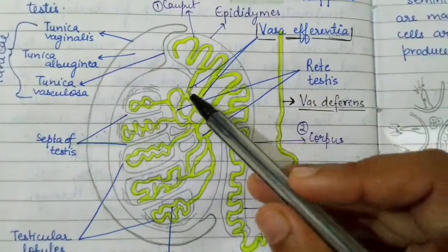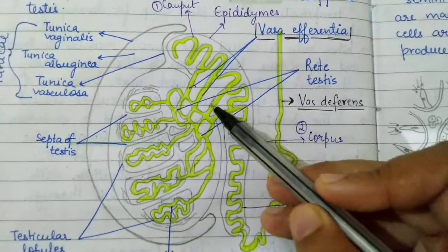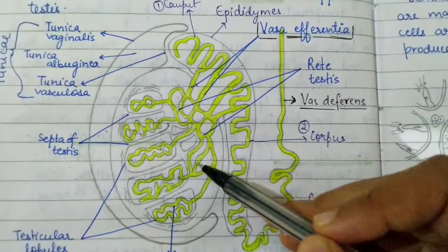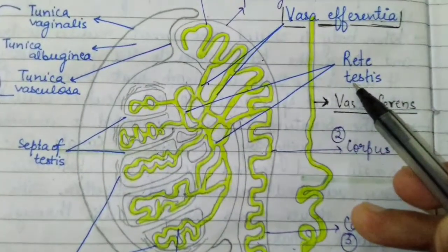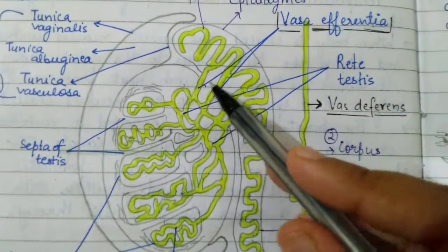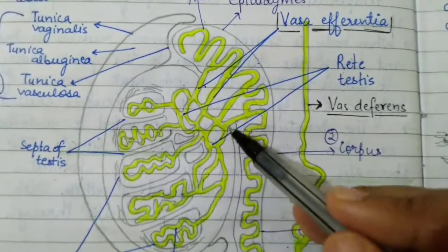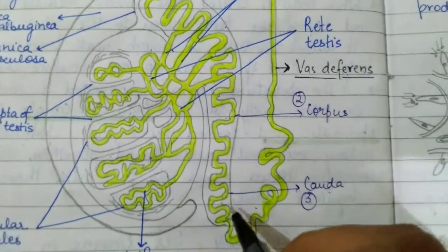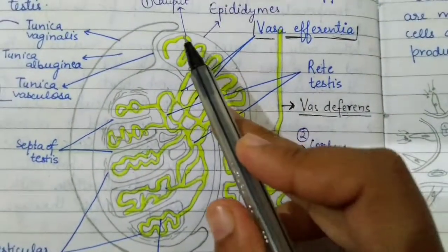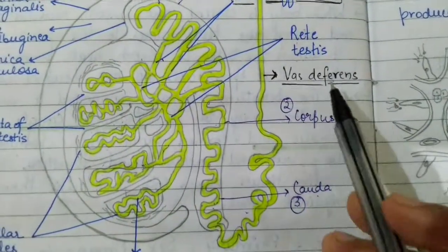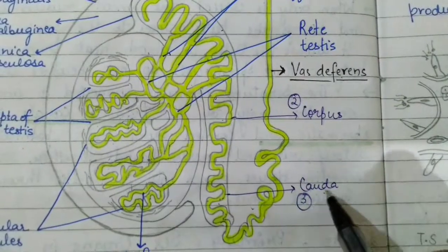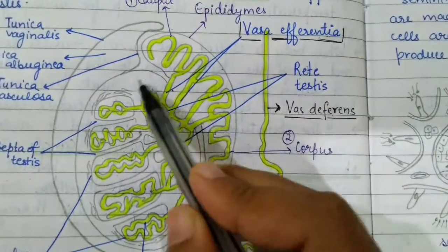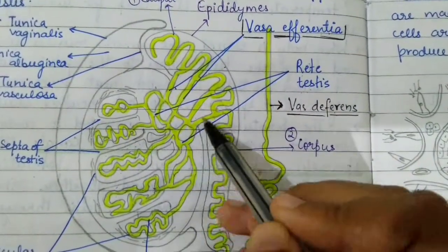The first difference: vasa efferentia arise from the network called rete testes — a network of fine tubes. Vas deferens, on the other hand, arises from the posterior end of the epididymis, specifically from the cauda epididymis.